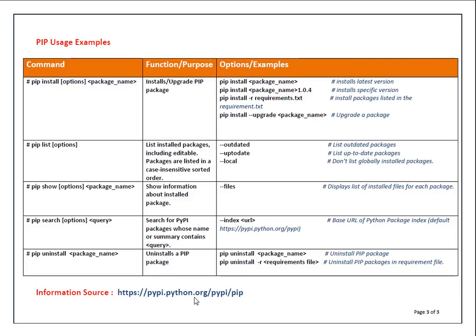'pip show' gives detailed information similar to 'rpm -qiv': package purpose, who wrote it, what files are delivered. 'pip search' works like 'yum search' — you provide a string such as 'boto' and it queries the pip index for all packages matching that string. To uninstall a package, use 'pip uninstall package-name'. You can also use the '-r requirements.txt' option with uninstall to remove multiple packages listed in the requirements file.